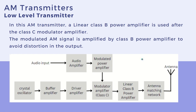The first type is the low-level AM transmitter. In this AM transmitter, a linear class B power amplifier is used after the class C modulator amplifier. The modulated AM signal is amplified by the class B power amplifier to avoid distortion in the output.